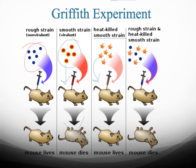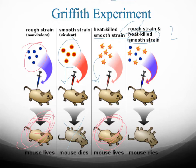In his last experiment, he took two types of bacteria — the rough and the heat-killed smooth — and mixed them together. You really wouldn't expect the mouse to die, but it did. That started to raise more questions: why would taking two nonlethal strains of bacteria, one naturally nonlethal and one that has been denatured, and putting them together now kill the mouse?